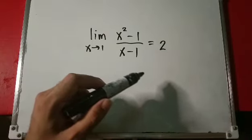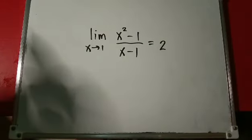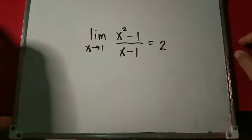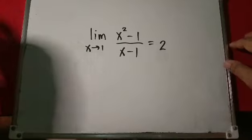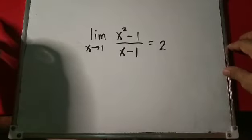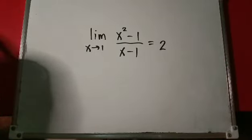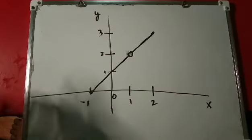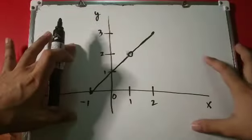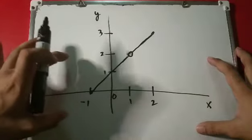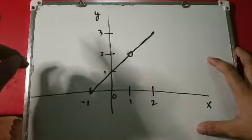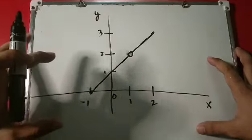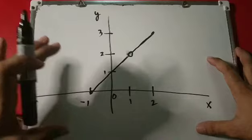It is a special way of saying: ignoring what happens when we get there, but as we get closer and closer the answer gets closer and closer to 2. As a graph it looks like this. In truth we cannot say what the value at x equals 1 is, but we can say that as we approach 1, the limit is 2.